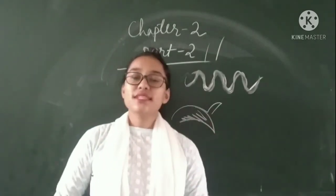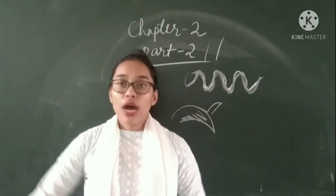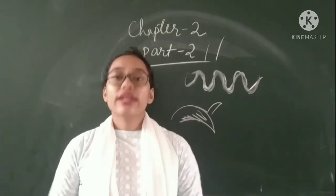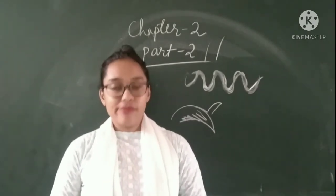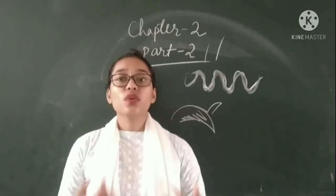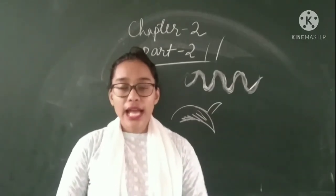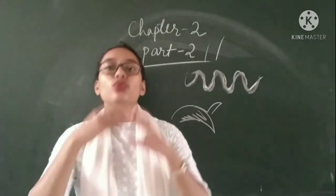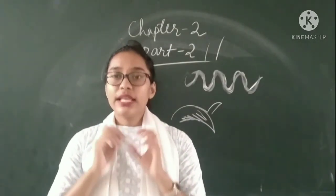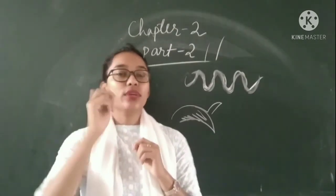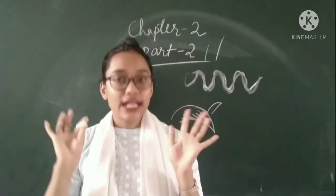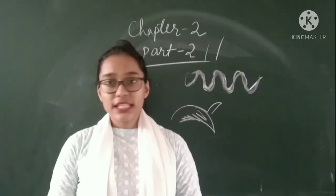The last one is movement in human beings. How do we humans move? For walking we use our hind limbs, that is our legs, to move from one place to another. And to hold an object or ride something we use our forelimbs - our hands are our forelimbs.